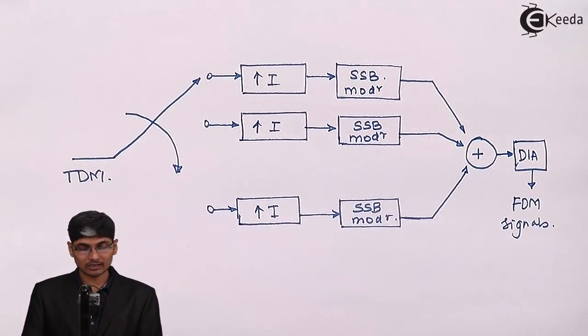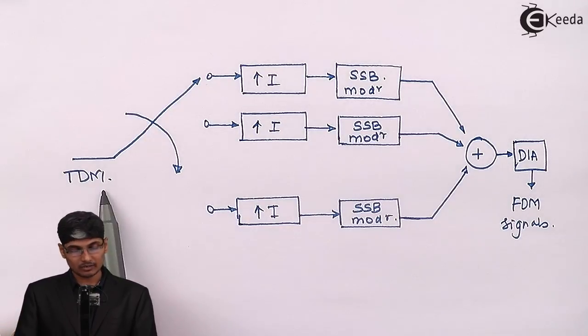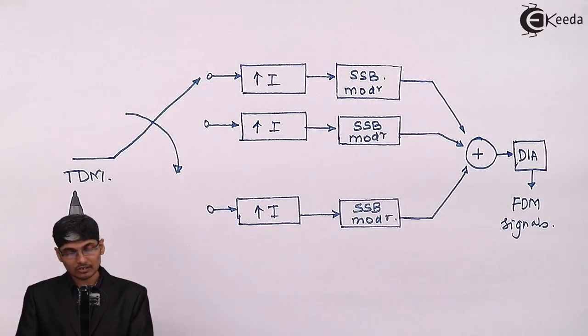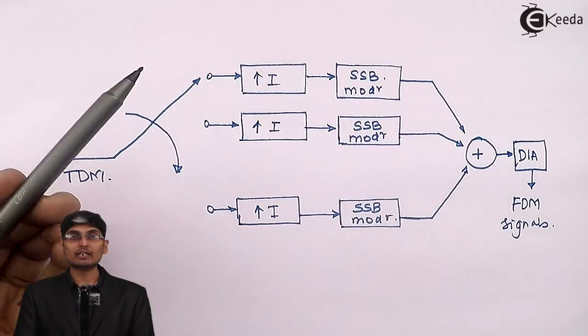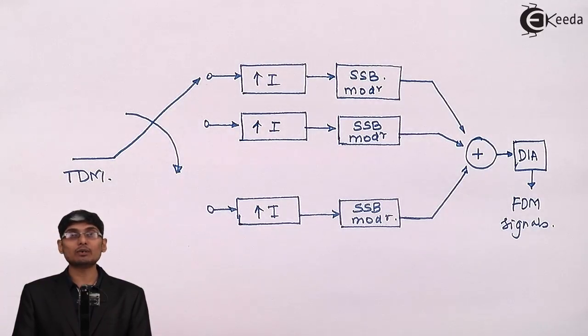Here I am going to achieve a TDM signal at the input. That TDM signal using a commutator is split over various channels. I am using an interpolator.